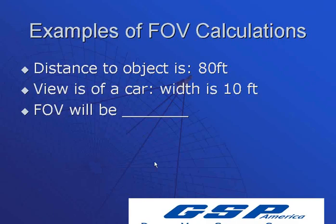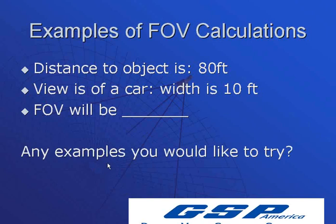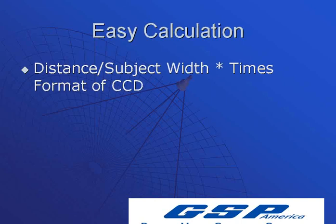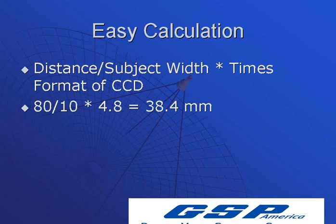Another option is just a quick, easy calculation. You can take the distance divided by the subject width, then multiply by the format of the CCD. Our chip size is 1/3-inch, and the horizontal measurement of that chip is 4.8 millimeters. So in this case, we take 80 divided by 10 times 4.8, and you get 38.4 millimeters. Even without a calculator, as long as you take the distance divided by the width and multiply by 4.8, you'll know exactly which lens you need.